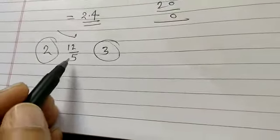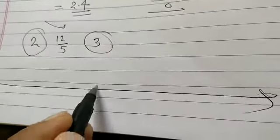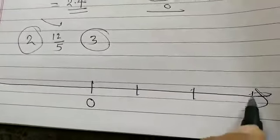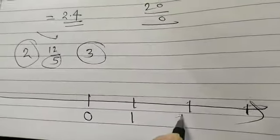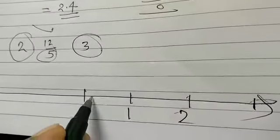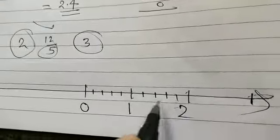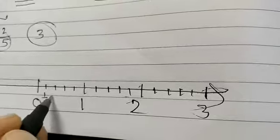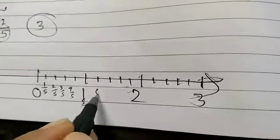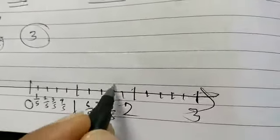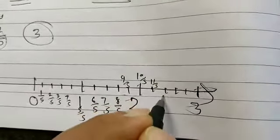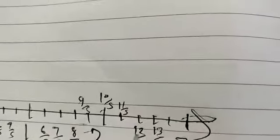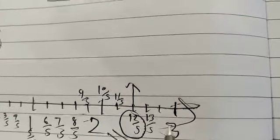You also have to show its actual position. So draw a number line with 0, 1, 2, and 3. Since the denominator is 5, divide all the blocks into 5 equal parts. From 2 onward, count the divisions: 10 by 5, 11 by 5, 12 by 5, 13 by 5, and so on. You have to show 12 by 5, so circle 12 by 5 and make an arrow — this will be the position of this number, lying between 2 and 3.